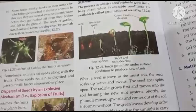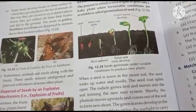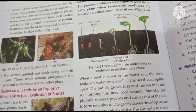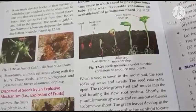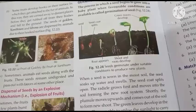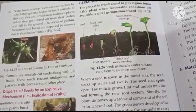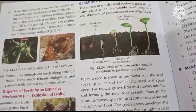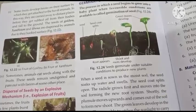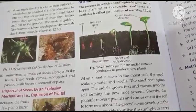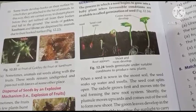Some fruits develop hooks on their surface by which they get attached to the fur of animals. कुछ seeds ऐसे होते हैं जिनके अंदर एक hook जैसी structure पाई जाती है जो animals के fur से attach हो जाती है। In this way, they are carried away to distant places. इस प्रकार से seed एक स्थान से दूसरे स्थान पर disperse हो जाता है, animals के hair में लगके।